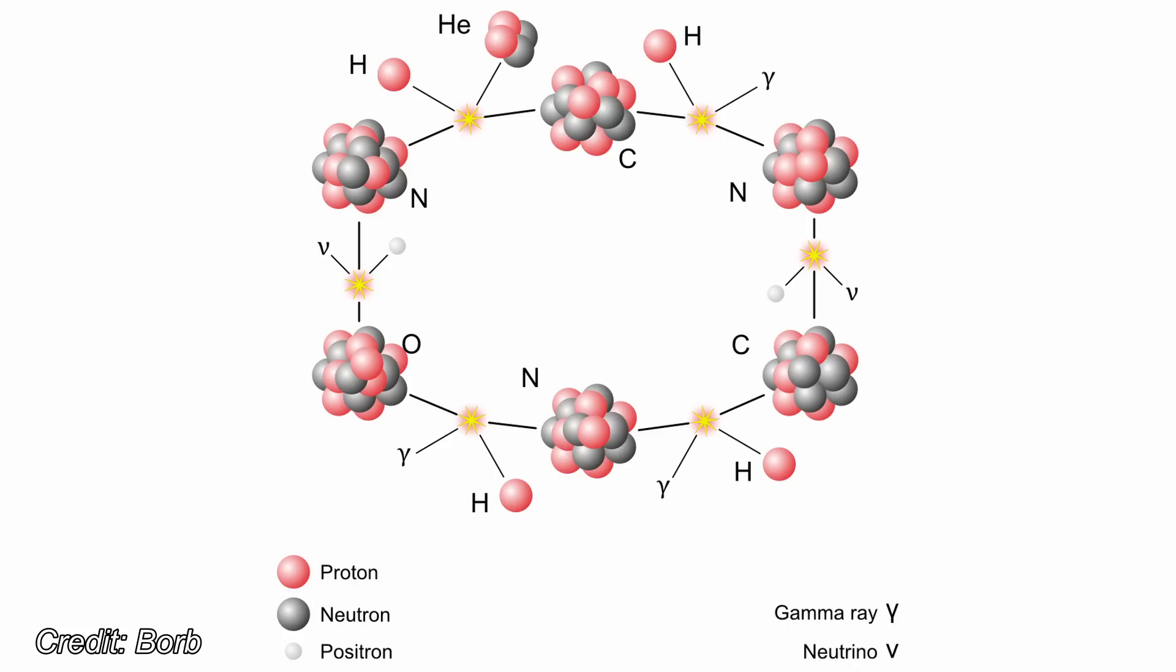Larger stars utilize the CNO cycle, a faster but more complex pathway that also converts hydrogen to helium through intermediate reactions involving carbon, nitrogen, and oxygen isotopes.